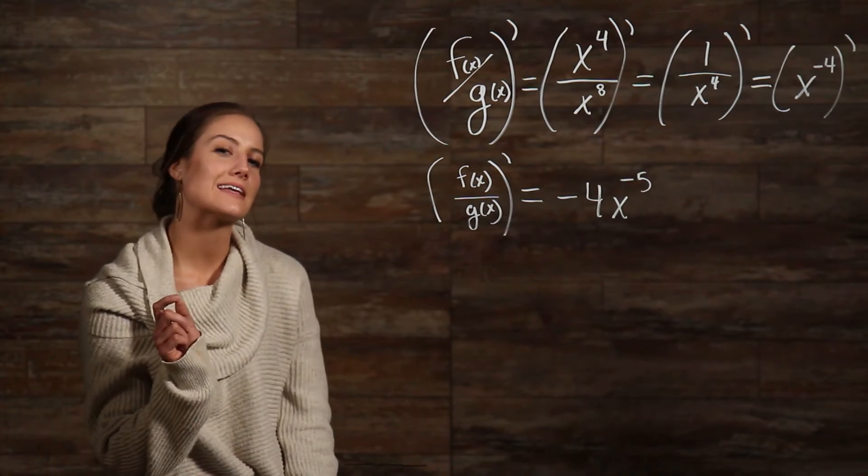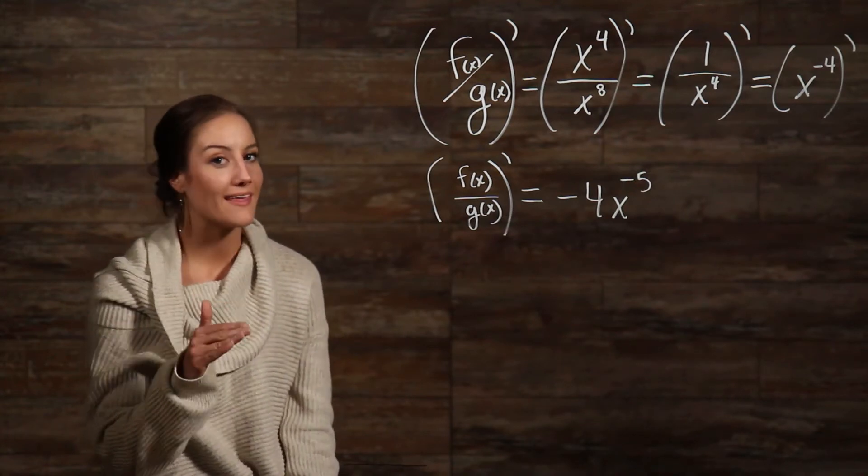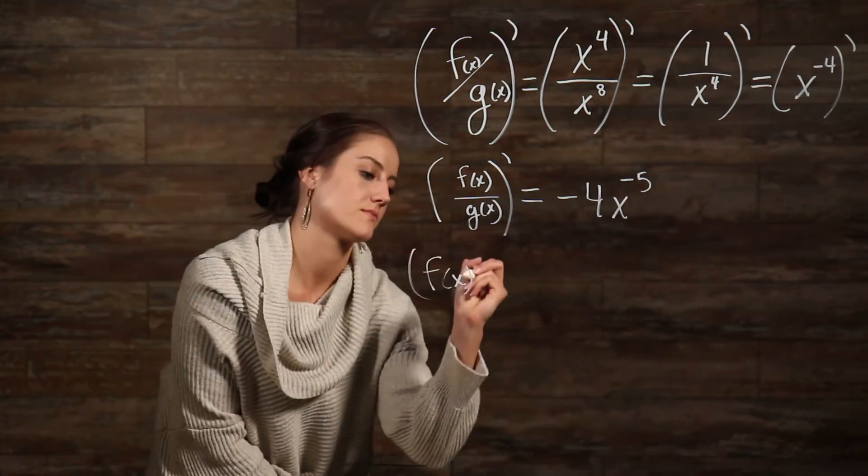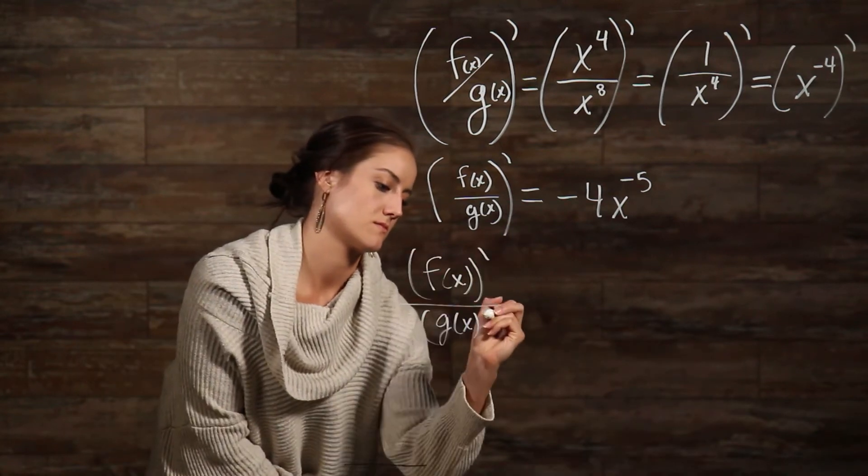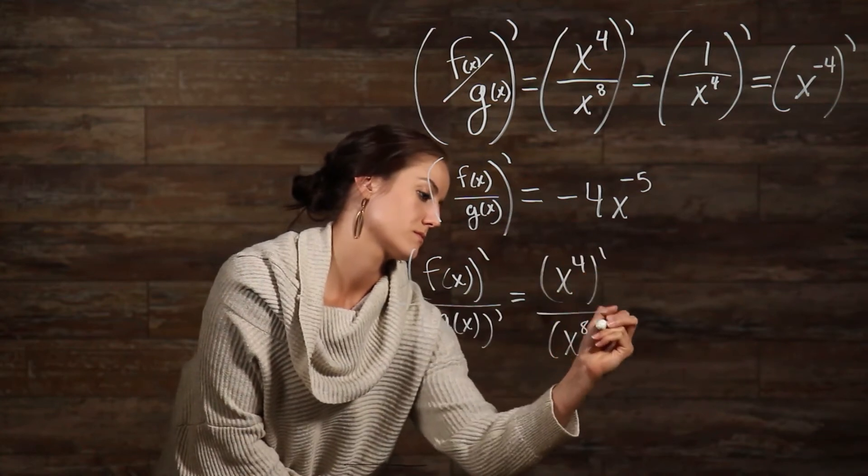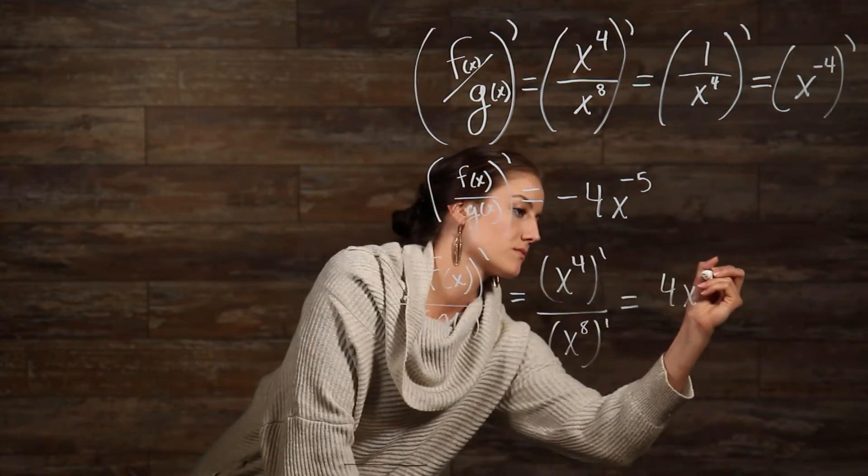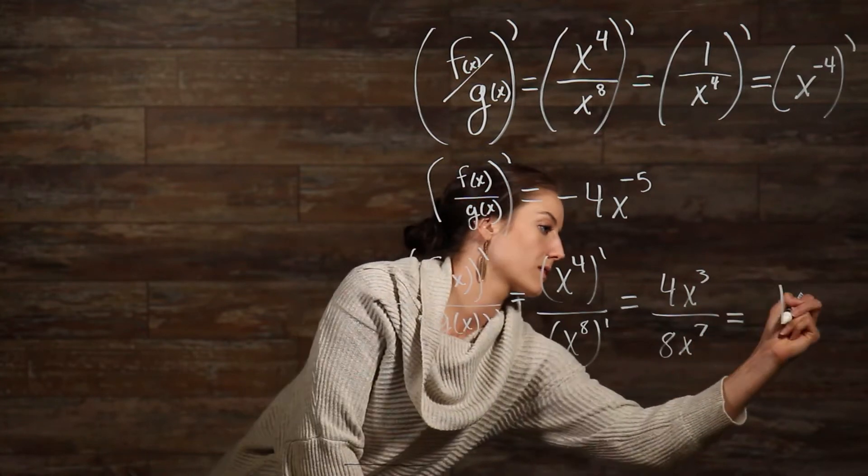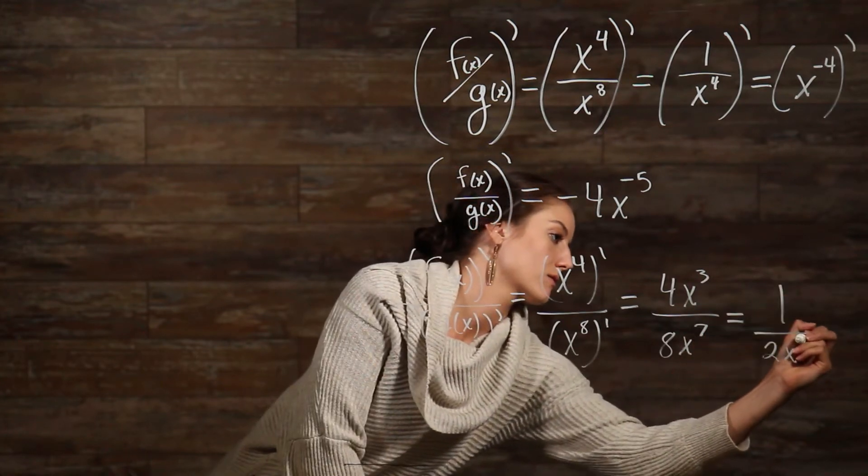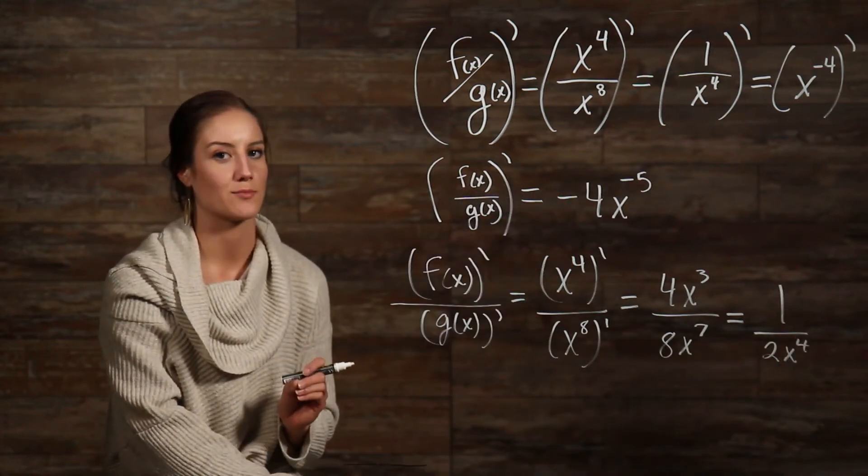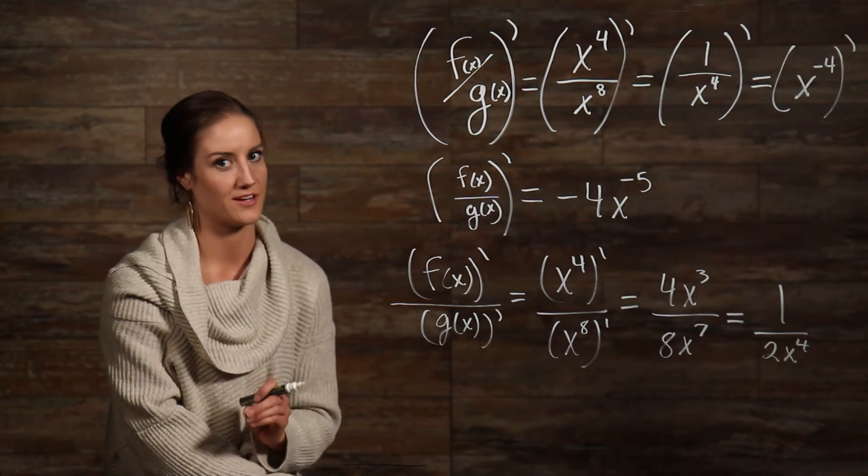Now, if we try taking the derivative of the top and then the bottom, then divide, let's see what we get. Again, we can see that f divided by g prime does not equal f prime divided by g prime.